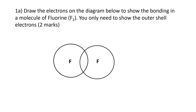The question says draw the electrons on the diagram below to show the bonding in a molecule of fluorine. You only need to show the outer shell electrons. So first of all we need to know how many electrons are in the outer shell of each fluorine atom, and to do that we look at the group number.